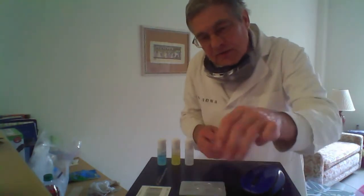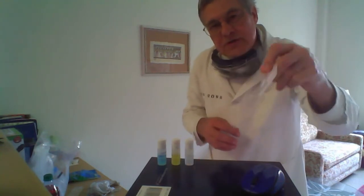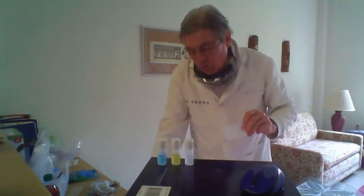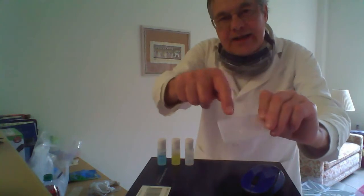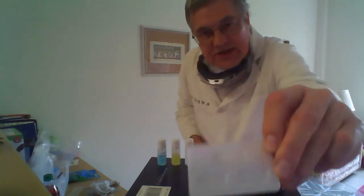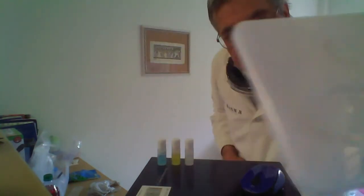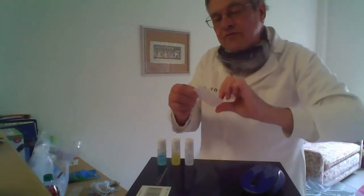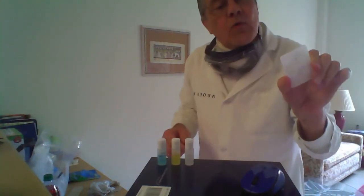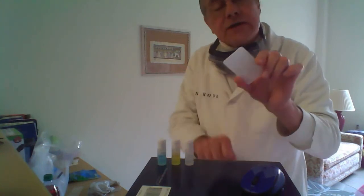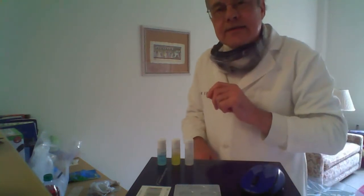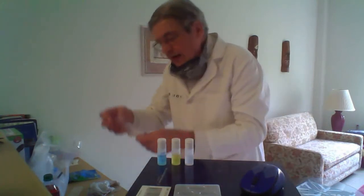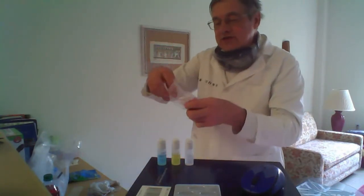Now to do this, we're going to mix one of the blood samples with each of these anti-sera in their respective wells on this plate. The plate has three wells: one for anti-serum A, one for anti-serum B, and one for anti-serum D as in dogma. So I'll start with blood sample number one.